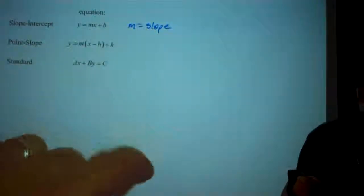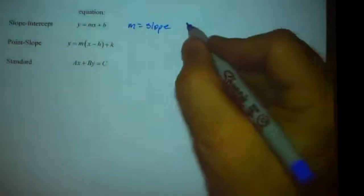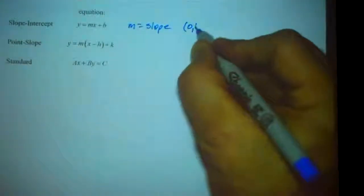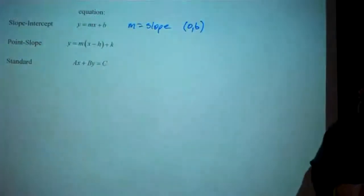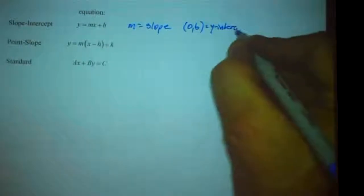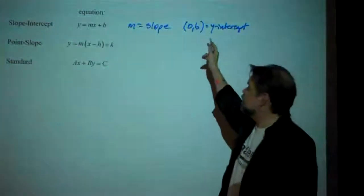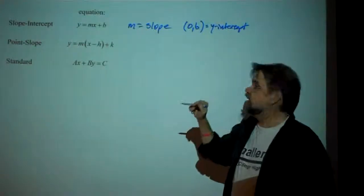With the top one, with the slope-intercept form, b, or actually 0 comma b, is our y-intercept. That's the point at which our line is going to intersect the y-axis.